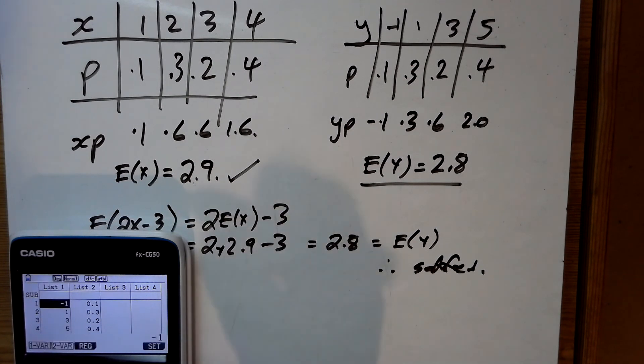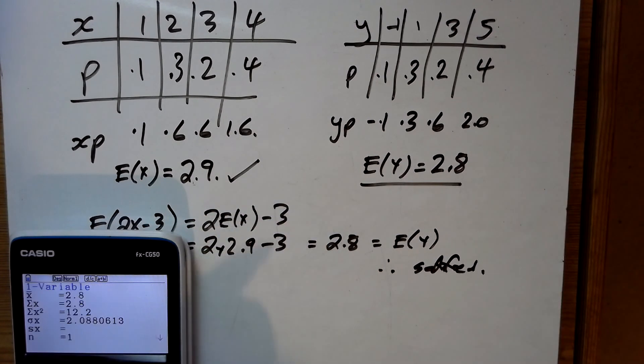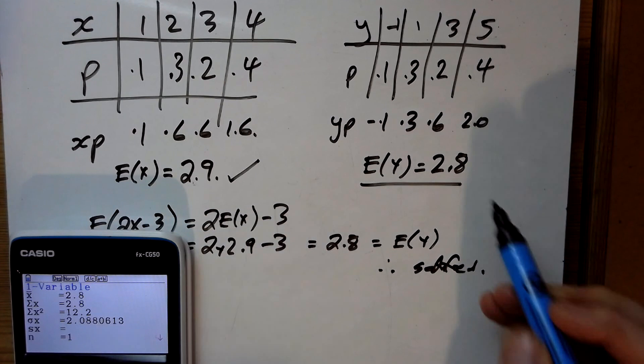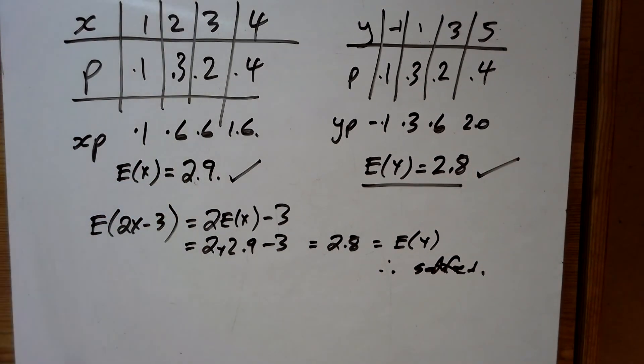2 times list 1 take away 3. And then now we've got all those numbers, those ones there. And again it now tells us the expected value of x is now 2.8, expected value of y of course it is now, so a few ways of doing it.